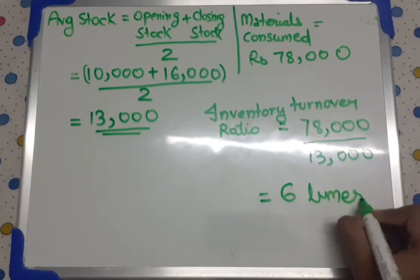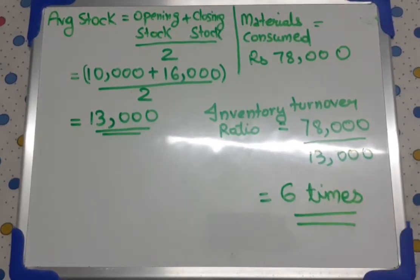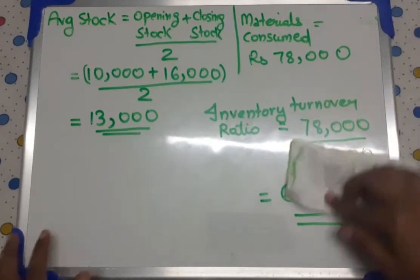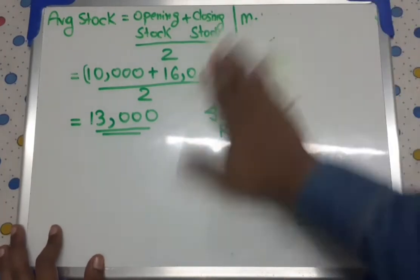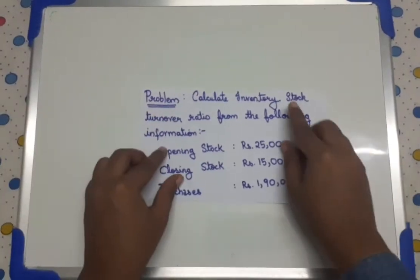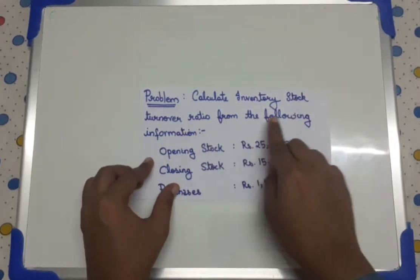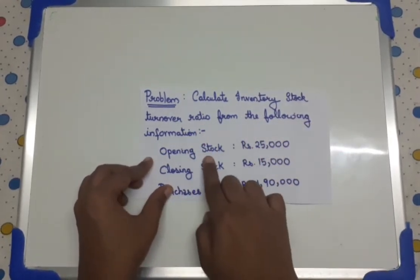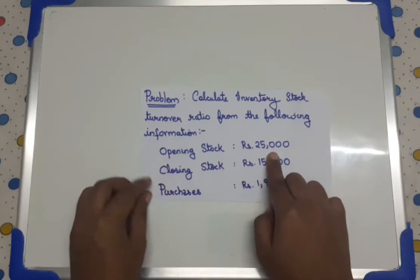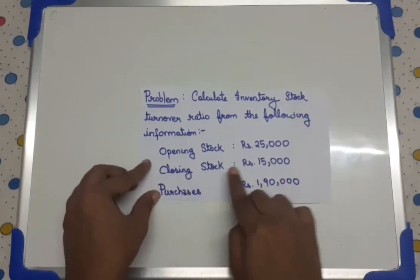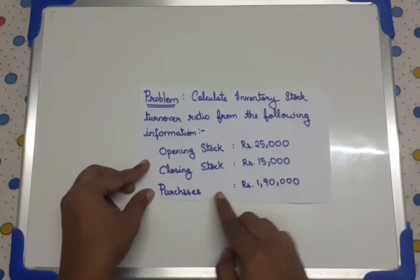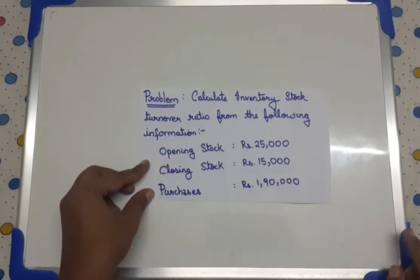We solved a really simple problem. Now let's solve another problem. The next problem is also given in the description. Calculate the inventory stock turnover ratio from the following information: opening stock is equal to Rs 25,000, closing stock is equal to Rs 15,000, and purchases is equal to Rs 1,90,000.